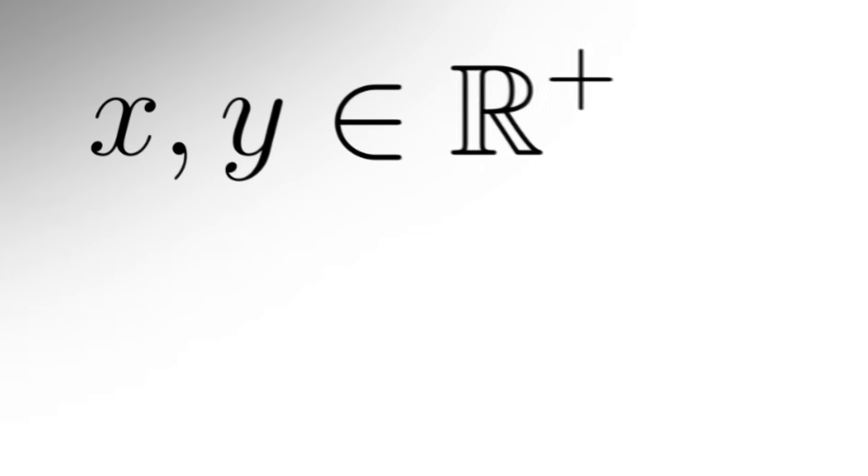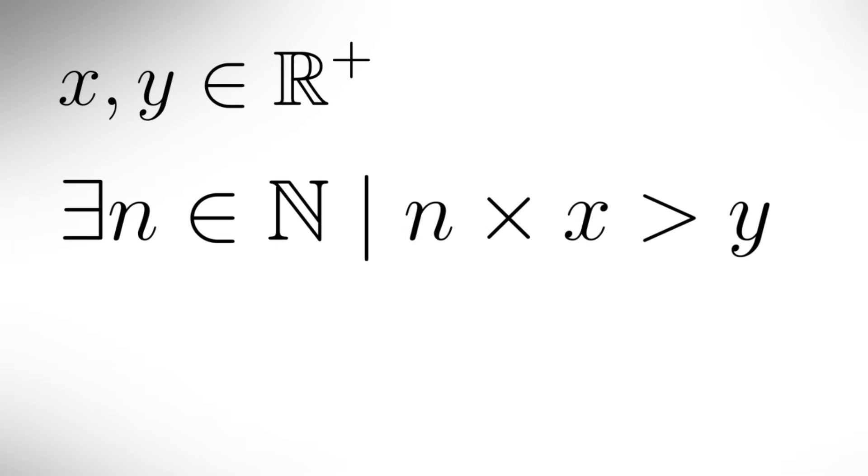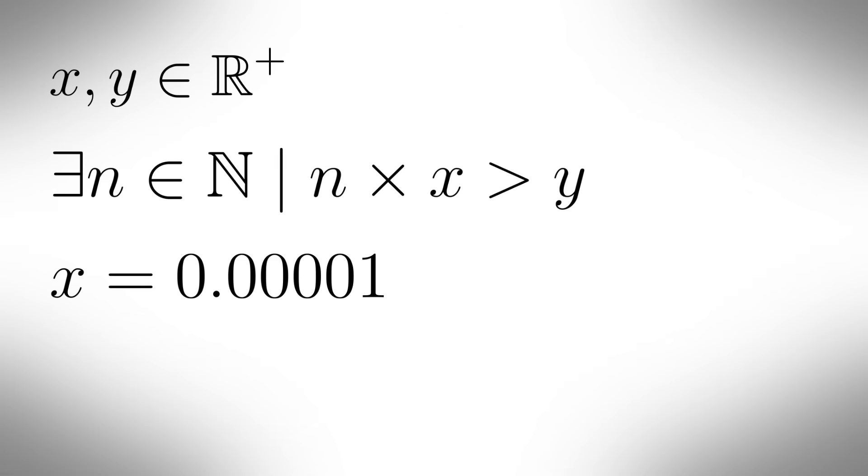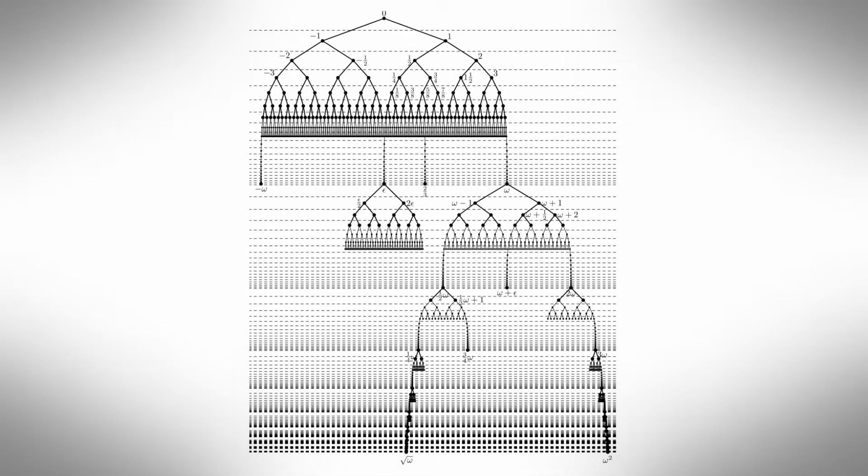Non-Archimedean analysis. For any two positive real numbers x and y, there exists a natural number n such that n times x is greater than y. This means that no matter how small x is, if you add it to itself enough times, you can exceed any given y. This is true for positive real numbers, but a non-Archimedean field is one that does not satisfy this property. For example, you can have a number system that extends the real numbers by including infinitesimals and infinitely large numbers.